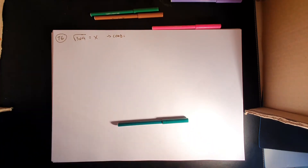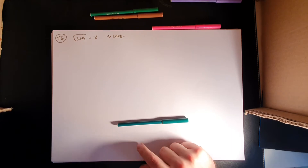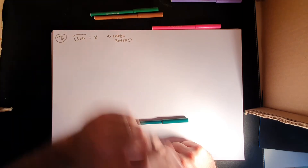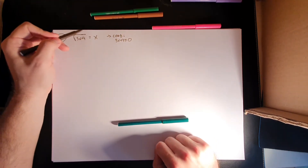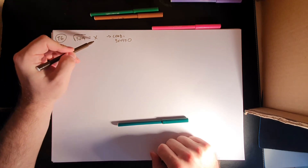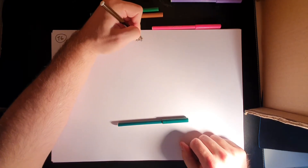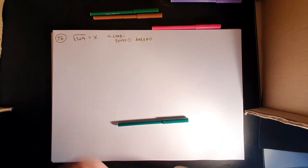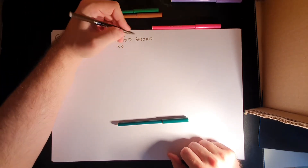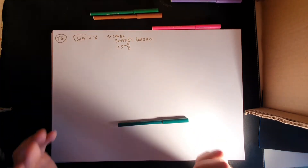If you look at just the root, there is one condition. If you look at the greater picture, there are two conditions. The things inside of the root, 3x plus 4, has to be greater or equal to 0. Since the whole left side has to be greater or equal to 0, the x on the right side also has to be greater or equal to 0. The left side leads us to x greater or equal to minus 4 over 3.